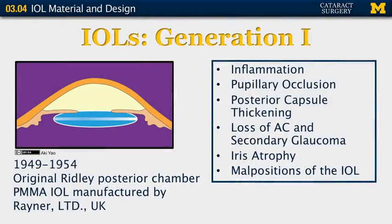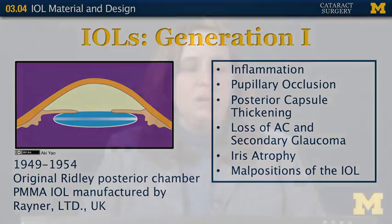Let me start first with a history of intraocular lenses. The original intraocular lens was created by Sir Harold Ridley. Sir Harold Ridley had noted that pilots were returning from World War II with pieces of plane canopy in the eye, and they were tolerating the material quite well. This canopy was made of polymethyl methacrylate, and he therefore decided this might be a good material to try for the first intraocular lens. He had some ideas that were quite good in that he designed a lens that was basically similar in size and shape to the natural lens.